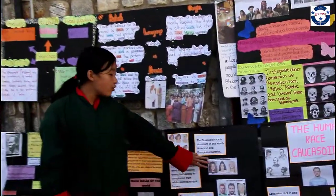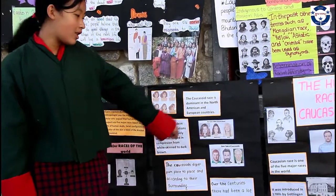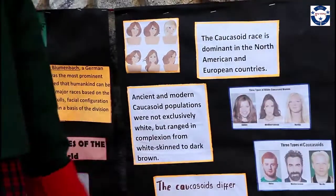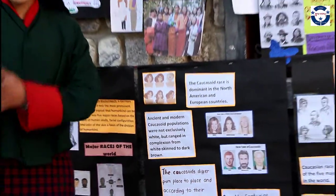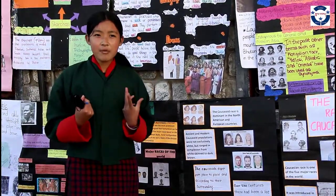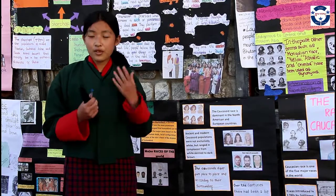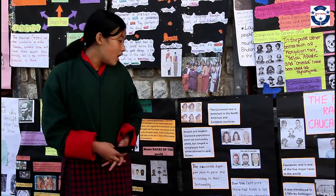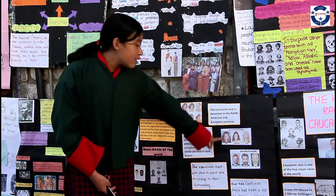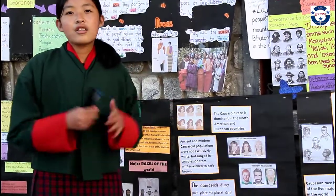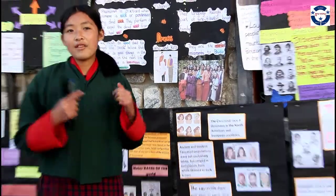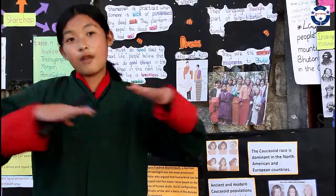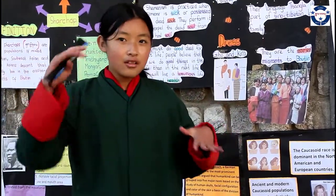Caucasian people differ from place to place according to their surroundings. There are three types of Caucasian women and three types of Caucasian men. The Alpine type usually has dark brown hair and a darker, healthier skin tone compared to the other two. The Nordic type is found in the upper regions and has lighter skin with darker hair, while the Mediterranean type is a mix of the Alpine and the Nordic.